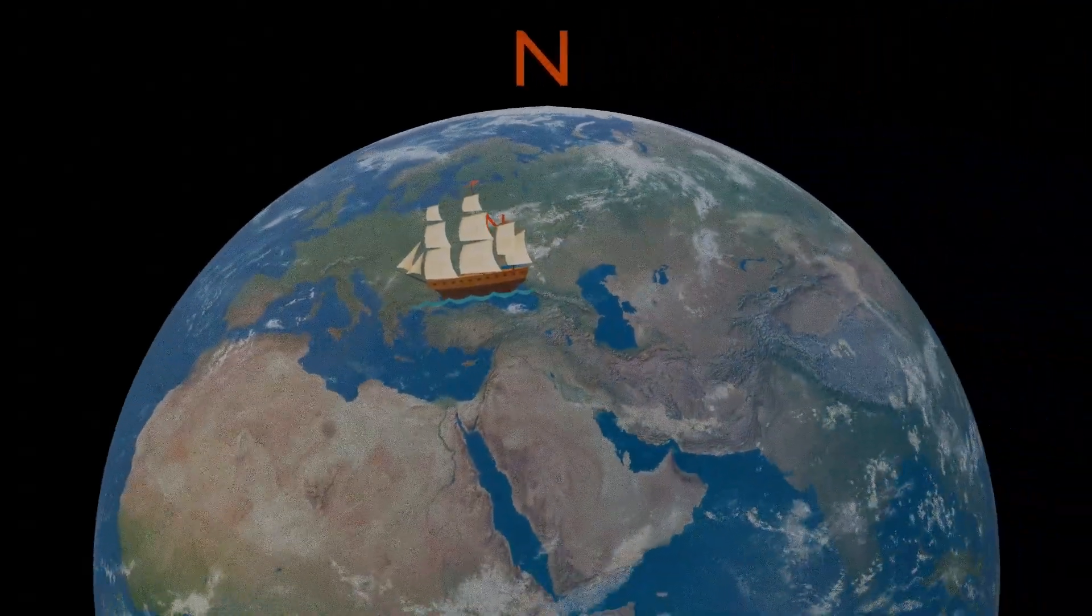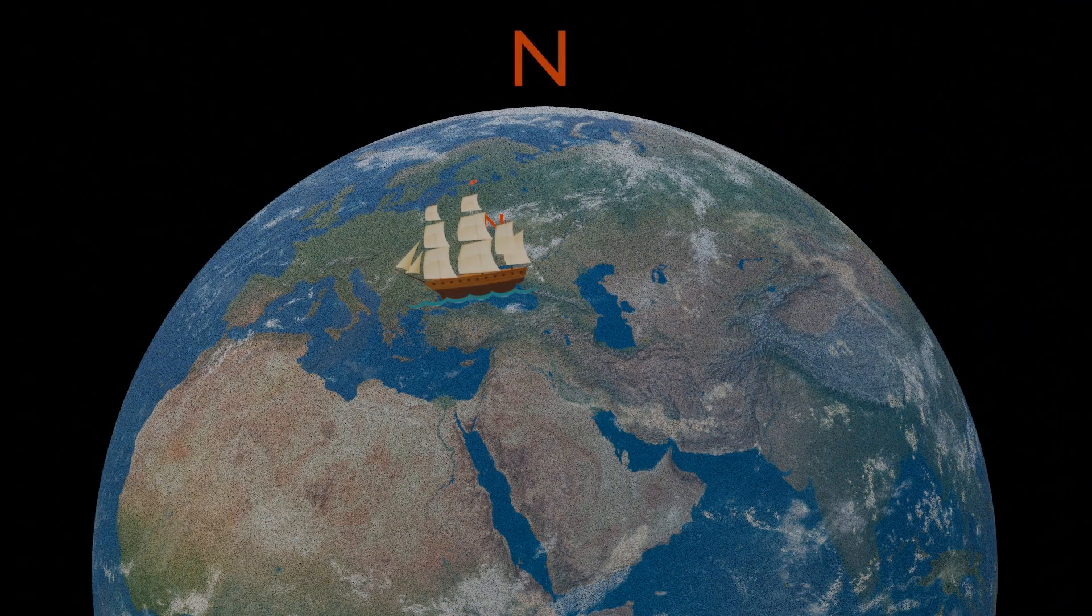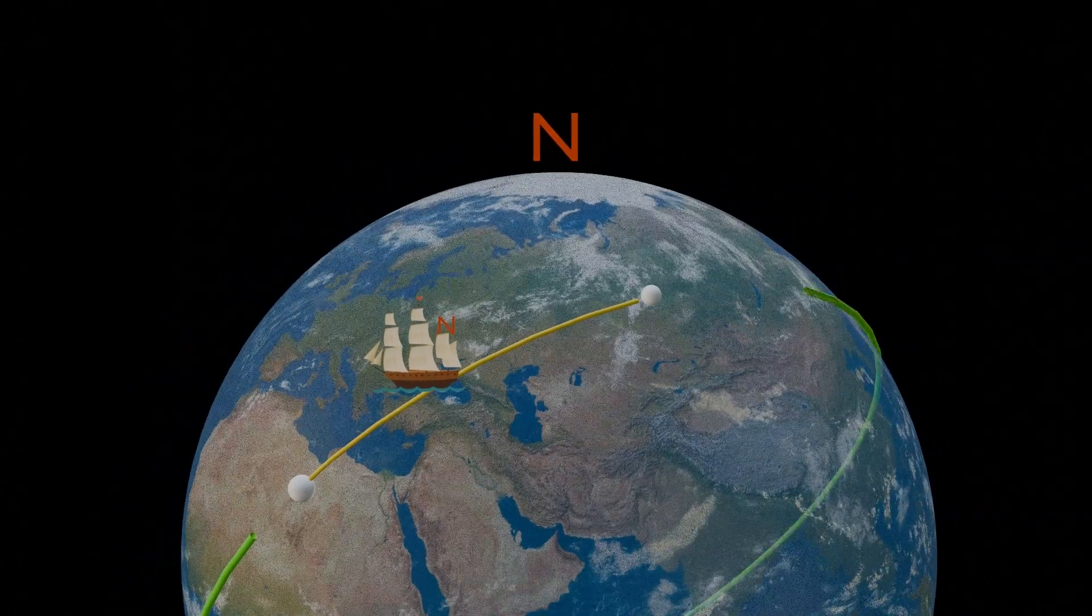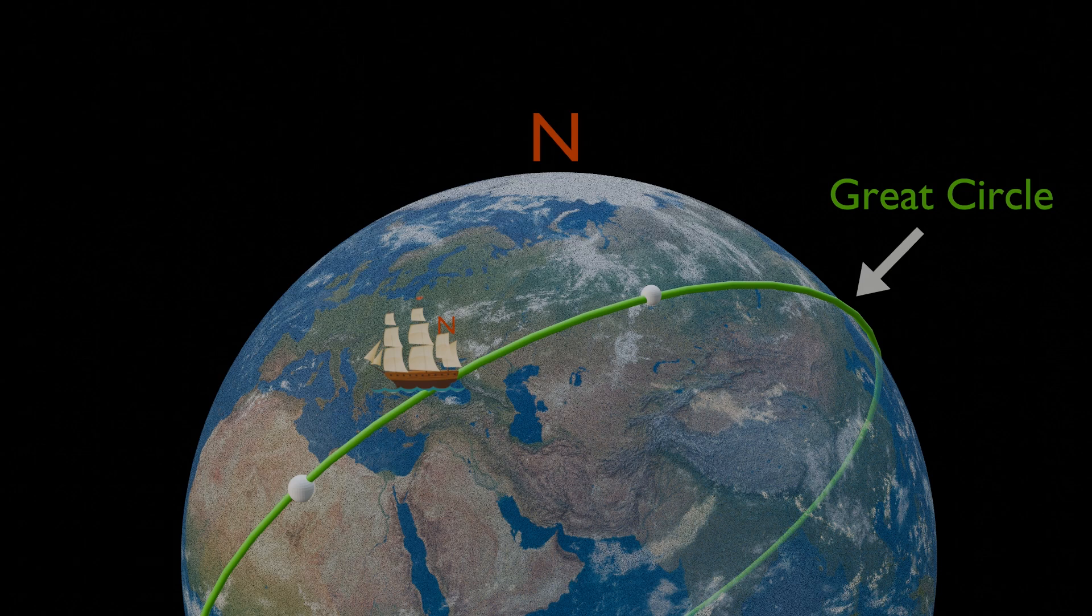Sailors back then wanted to find the fastest way to travel between two places on the ocean. This fastest way is called a great circle route, any circle that centers on the center of the Earth.